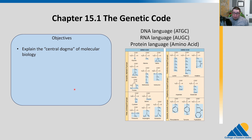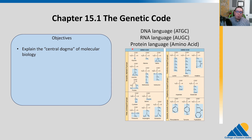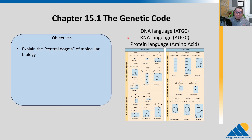So the genetic code — how is the information stored? To examine this, we first need to talk about what we call the central dogma of molecular biology. This involves three different molecular languages: the DNA language, where we have A, T, G, and C letters; the RNA language, where we have A, U, G, and C — slightly different nucleotides; and then the protein language, which is amino acids.